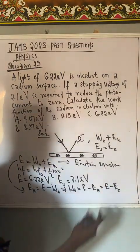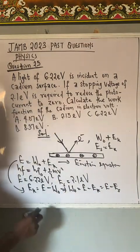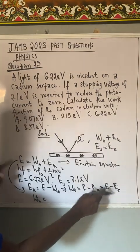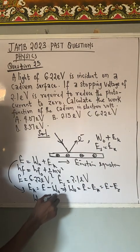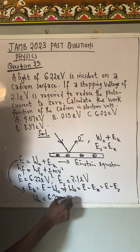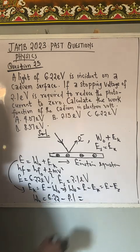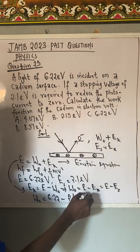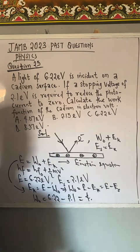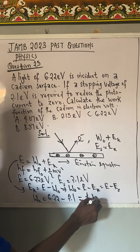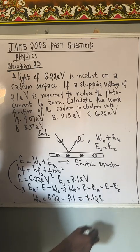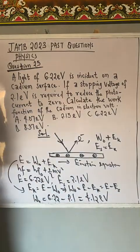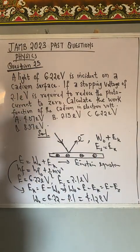The remaining thing is to substitute what we have. W naught will be equal to E, which is 6.22 minus 2.1. So the final answer here will be 4.12 electron volts.